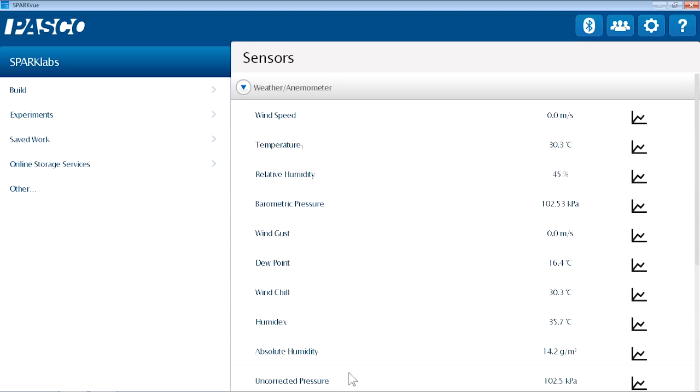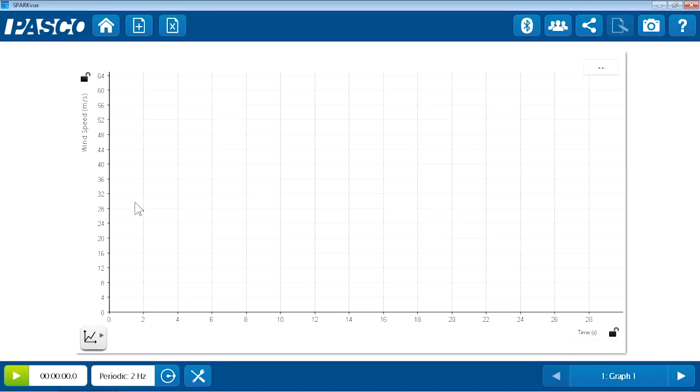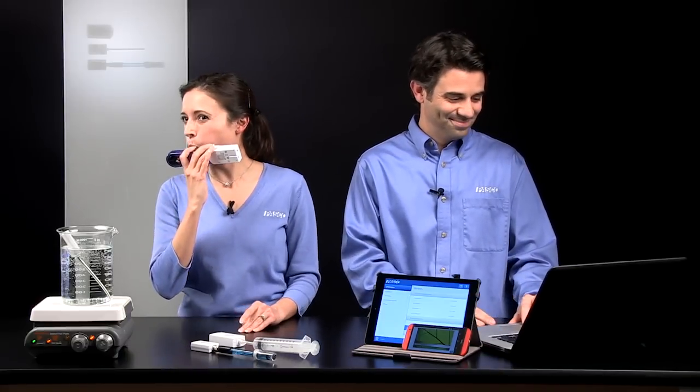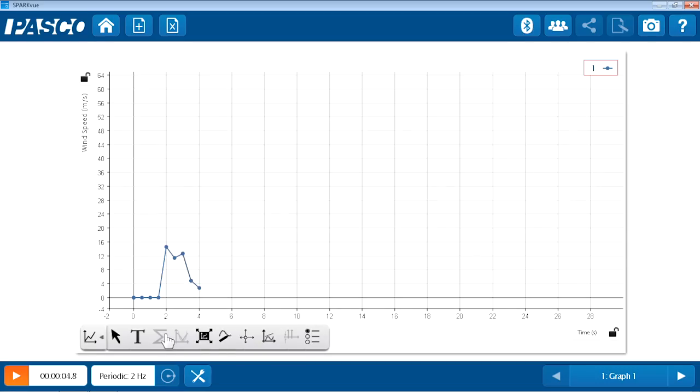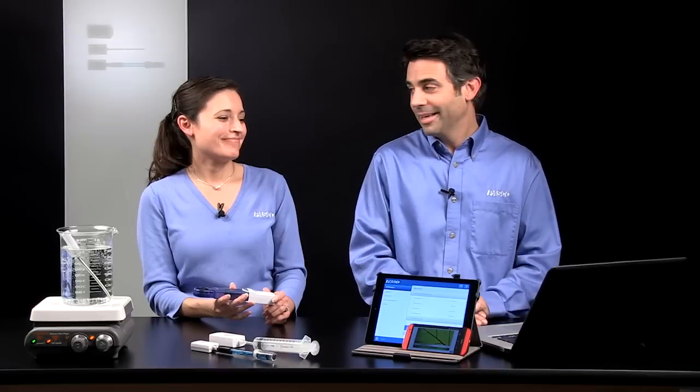And this is one of the advantages of those passport sensors is they can be multi-measure. So now I see all those measurements available. I'm going to touch wind speed. And we're going to quickly generate some data.